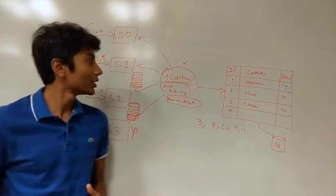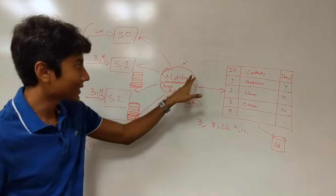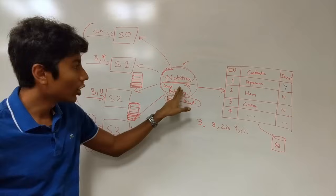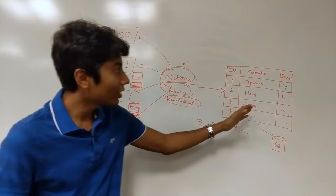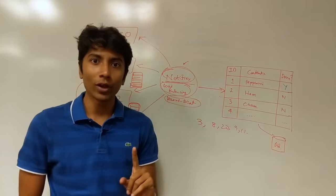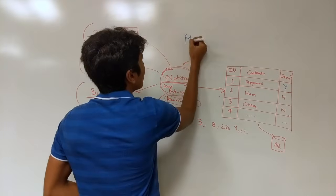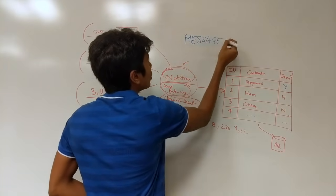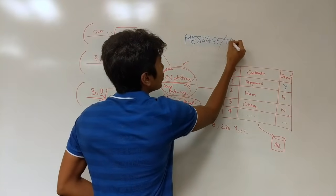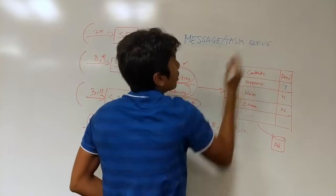Now what if you want all the features of assignment or notification, load balancing, a heartbeat and persistence in one thing. That would be a message queue. And for us it's not so much a message as a task queue.